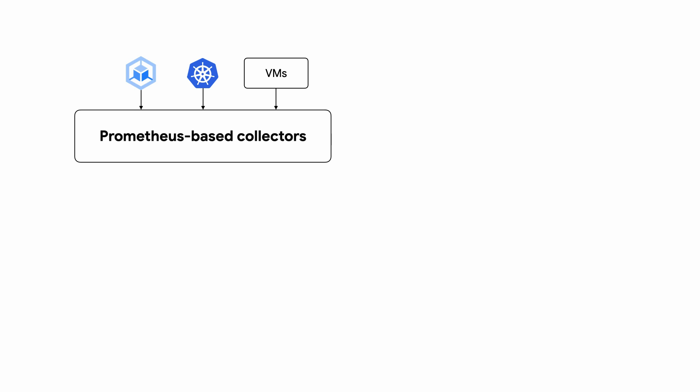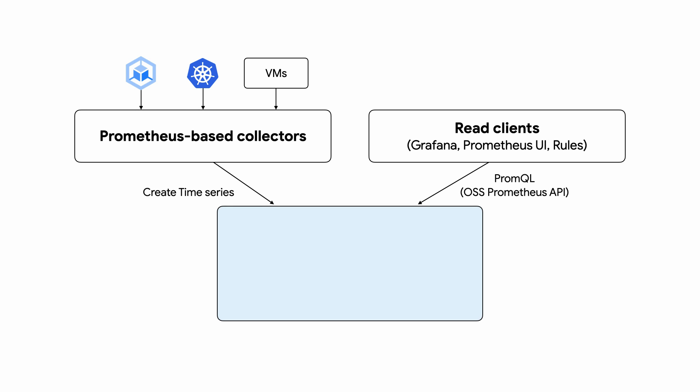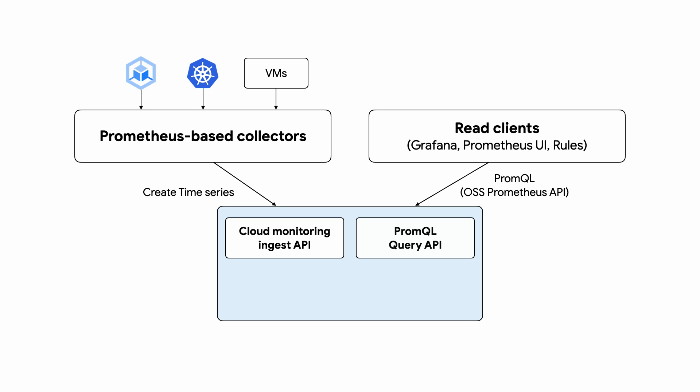Plus, it's backed by a globally distributed team of Google SREs. Managed Service for Prometheus stores all data in Cloud Monarch, which means you get fully managed, globally distributed, planet-scale storage of all your time series data.